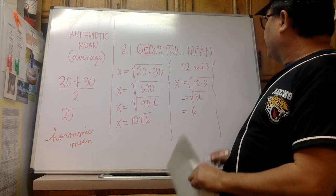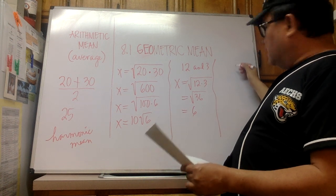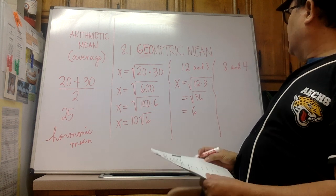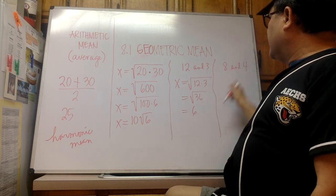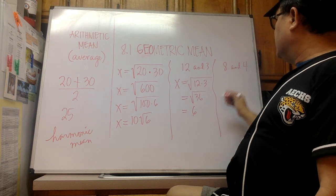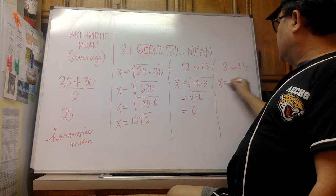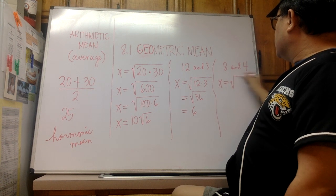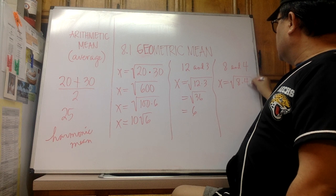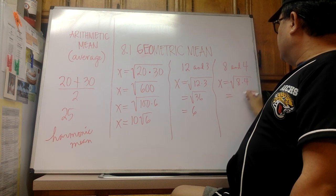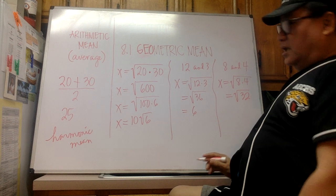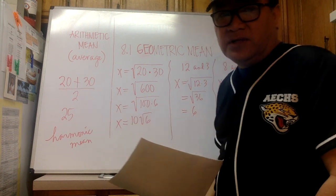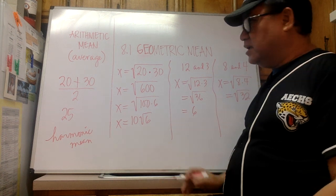In example B, the given numbers are 8 and 4. And to find the geometric mean between those two numbers we write x = the square root of 8 times 4. 8 times 4 is equal to 32, square root of 32. And just like any radical expression, we try to simplify this square root.